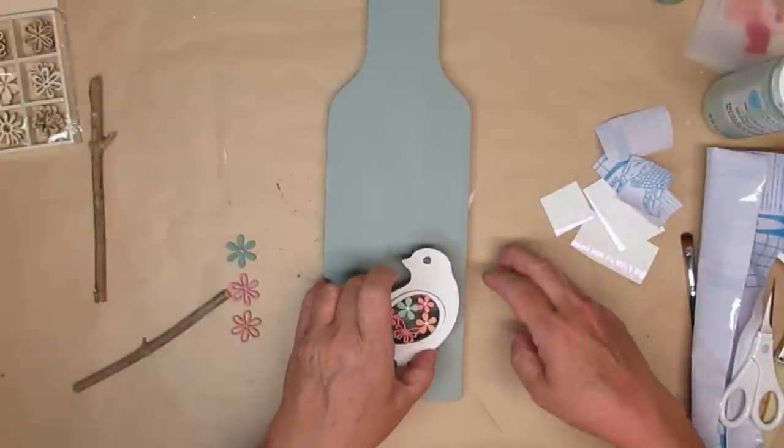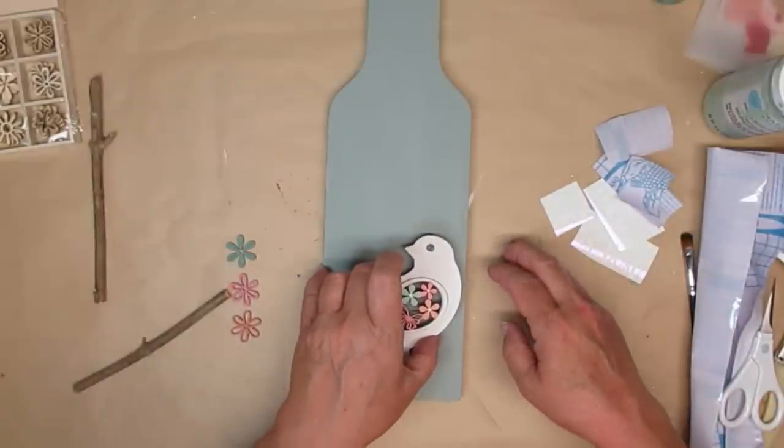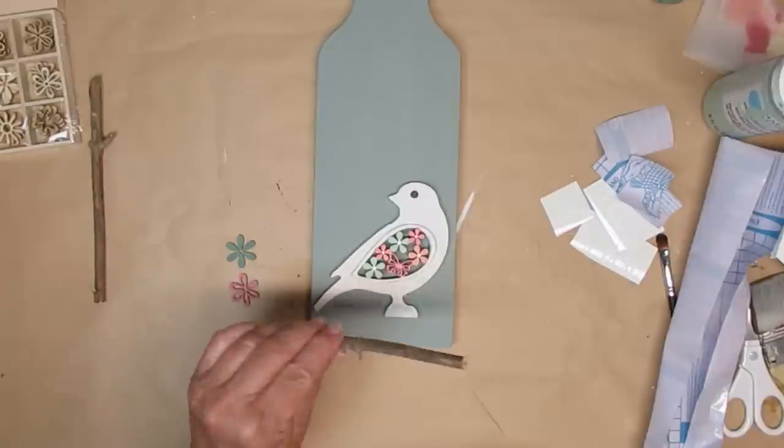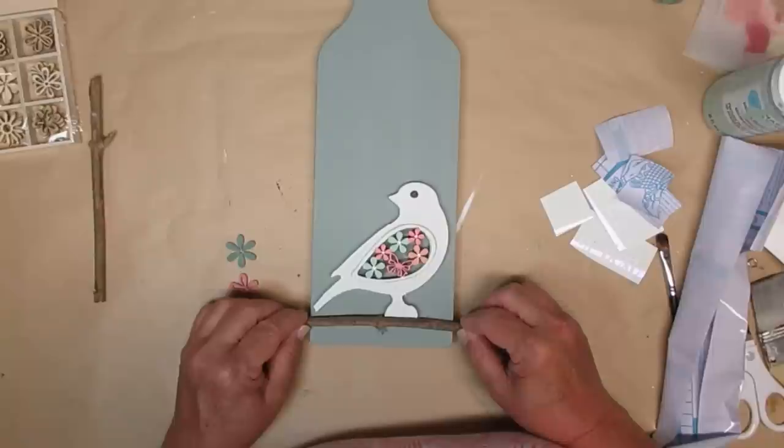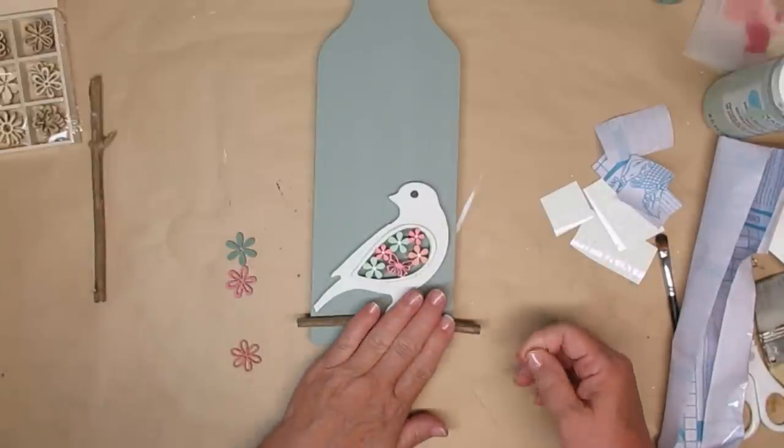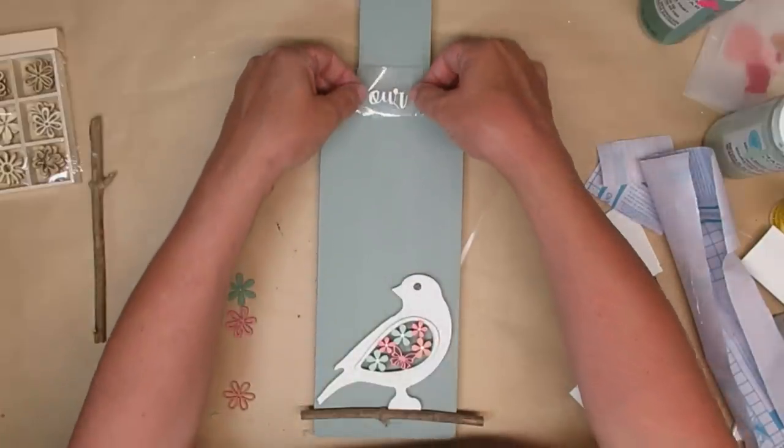Now it's time for the assembly. I'm going to hot glue the bird towards the bottom of the board and then I've got a stick that I grabbed from my backyard and I'm going to glue that on the bird's feet so it looks like a perch.